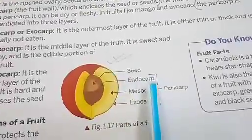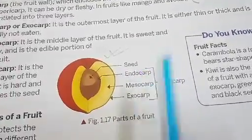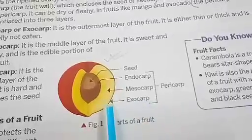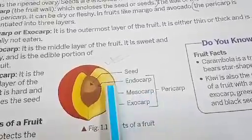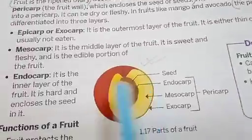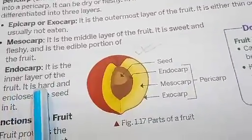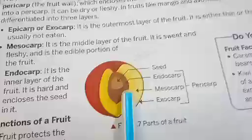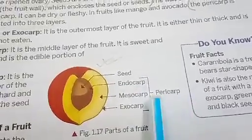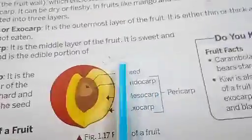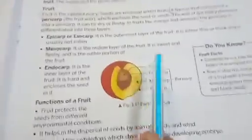The pericarp is divided into three layers: exocarp, which is the outermost layer; mesocarp, which is the fleshy part of the fruit; and endocarp, which is the inner layer of the fruit. The endocarp encloses the seed. So pericarp is the fruit wall having three layers inside which the seed is present.